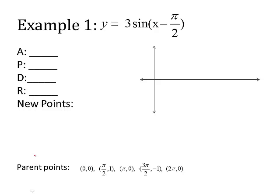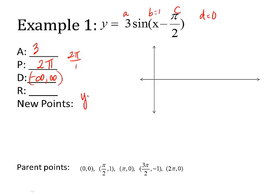Here's the first equation: 3 sine of (x minus π/2). So a is 3, b is 1, c is negative π/2, and d is 0. The amplitude is 3. The period is 2π divided by b, which is 1, so the period is just 2π. The domain is negative infinity to positive infinity. For the formula: x divided by 1 plus π/2 for x-coordinates, and y times 3 for y-coordinates. Now apply these changes to the parent sine points.